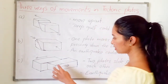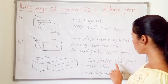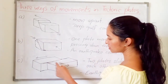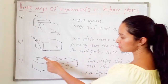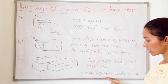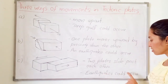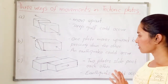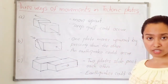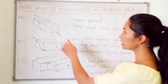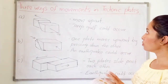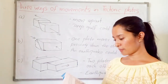The third type: two plates slide past each other — this plate goes one side and the other plate goes the other side. Because of this sliding movement, an earthquake could also occur. So in these second and third movements, earthquakes can occur, while in the first movement a gulf could form. These are the three ways of movement in tectonic plates.